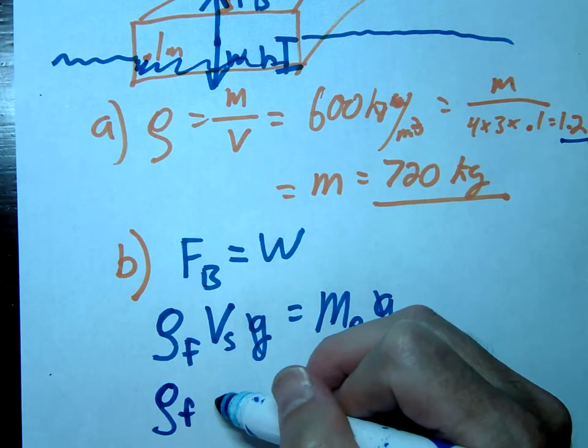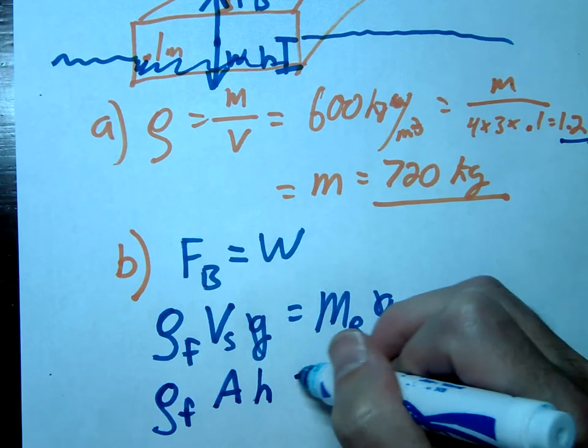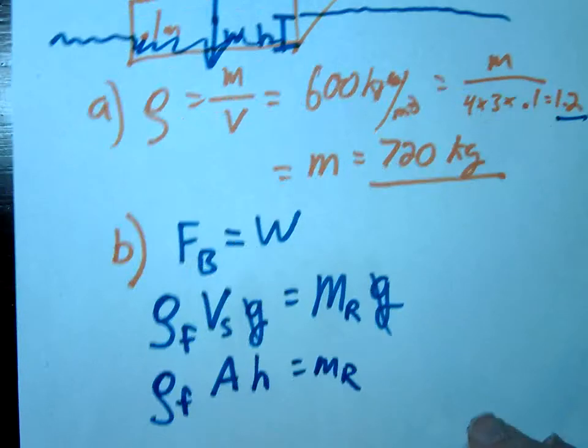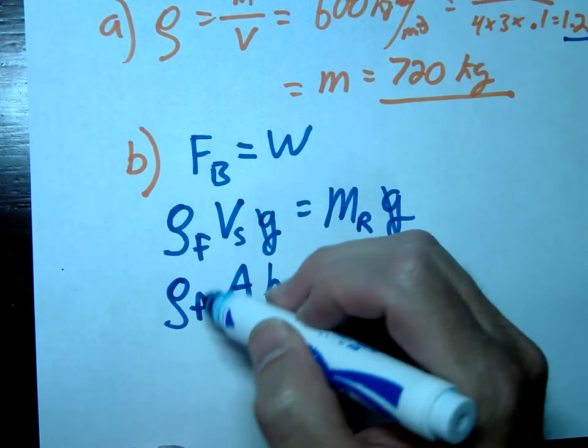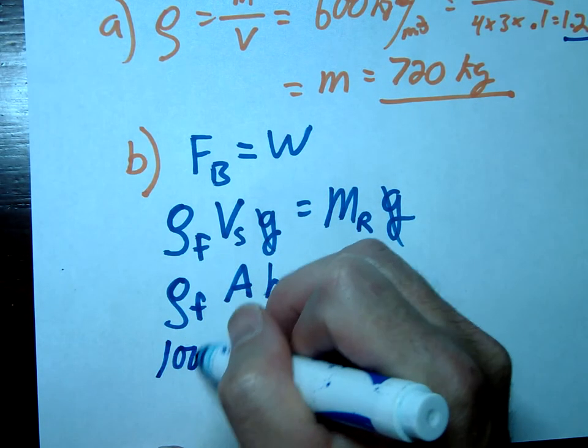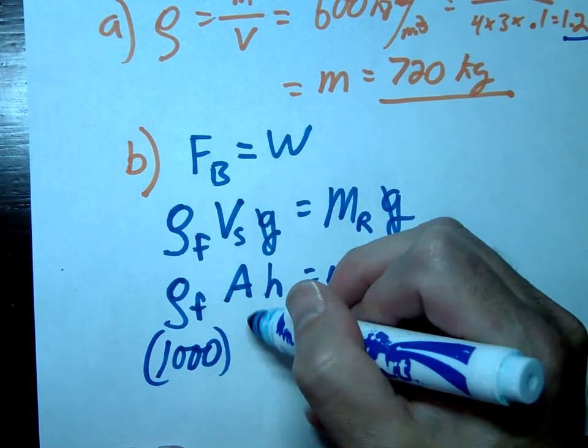So we could write that as area times the height that's underneath and then we'll just go ahead and solve this. So the density of the fluid, so that's just water again, make sure that this is the fluid here, this isn't the raft density.